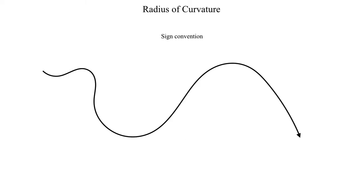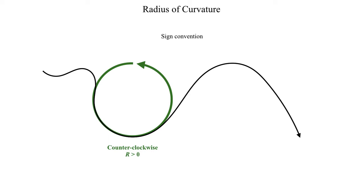Another thing to point out is the sign convention used for radius of curvature. Radius of curvature can be positive or negative depending on the orientation of the flow pattern. Looking at this particular flow pattern where the flow is traveling from left to right, if I draw the circle and take into account the flow direction, it traces a circle that rotates in the counterclockwise direction. By convention, a counterclockwise radius of curvature is defined as a positive radius of curvature.